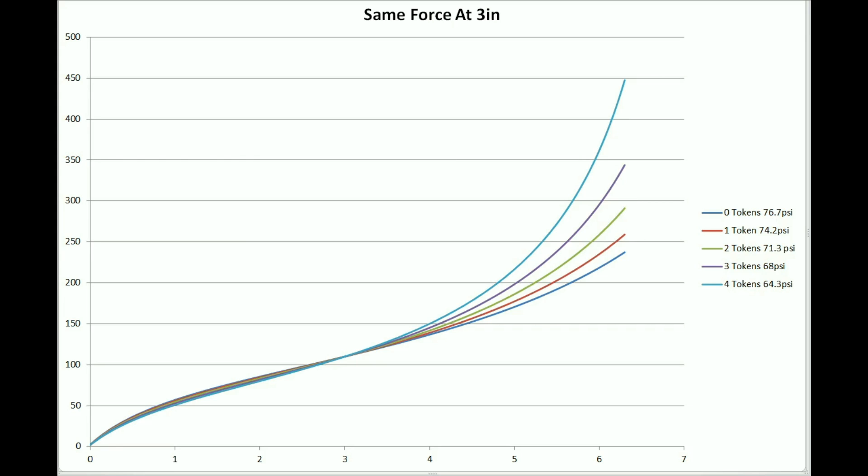So, between zero tokens here at 76 psi, and four tokens at 64 psi, we're only seeing a 12 psi difference, which in this case is 20%, but it's 20% variation in pressure, despite seeing close to 100% variation in ending stroke force. So, the force required to bottom it out.